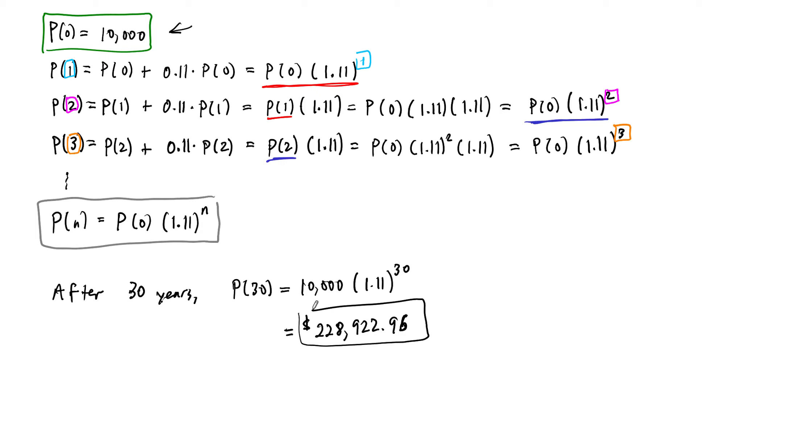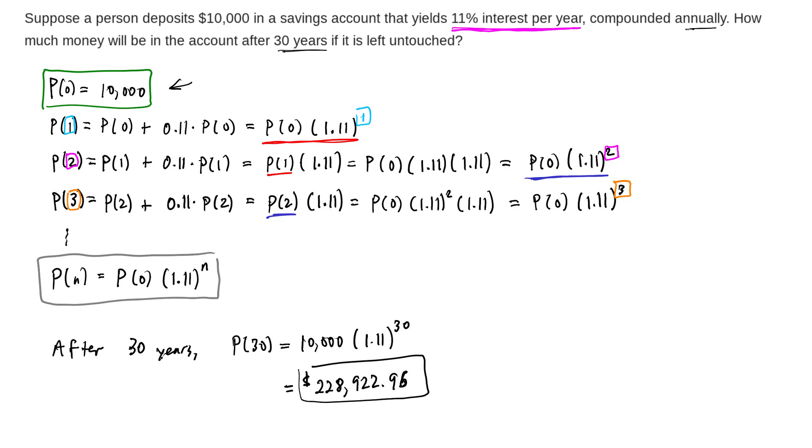But that's obtained by, first we wrote this as a recurrence relation, and then we were able to write a closed form geometric progression, geometric sequence formula, and then we just picked out the 30th n equals 30 element of that sequence. And so that's how much money is in our bank account.